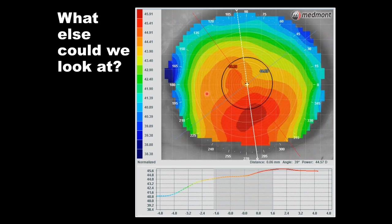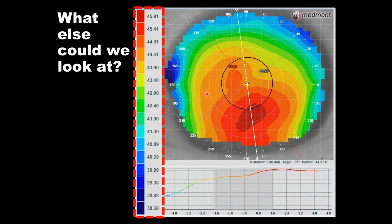What else could we look at? Let's look at the scale range — one of the easier and more efficient tools to determine if you're looking at an irregular cornea. The steepest curvature is at the top of the graph, the flattest at the bottom. There is approximately a seven to almost eight diopter distribution of power across this cornea. Normal corneas have about 10 diopters or less, so this patient is in that 'less' column — this would be considered a normal distribution.